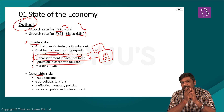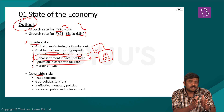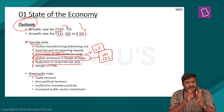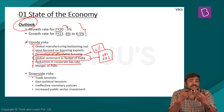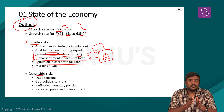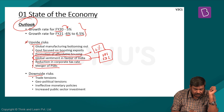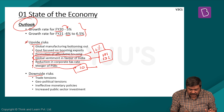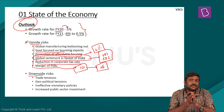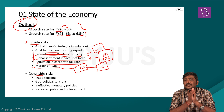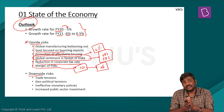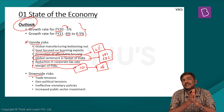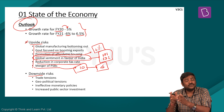Fifth, the government has reduced the corporate tax rate. For existing companies, corporate tax was reduced from 30% to 22%. For new manufacturing companies set up after a particular date, the corporate income tax rate has been reduced to 15%. This is expected to boost investments in manufacturing, create employment opportunities, and contribute to higher GDP. Sixth, the government has announced a merger of 10 PSBs into four larger PSBs. Larger banks will be more efficient, able to utilize their bigger balance sheets to lend for infrastructure and larger projects, promoting more credit offtake.